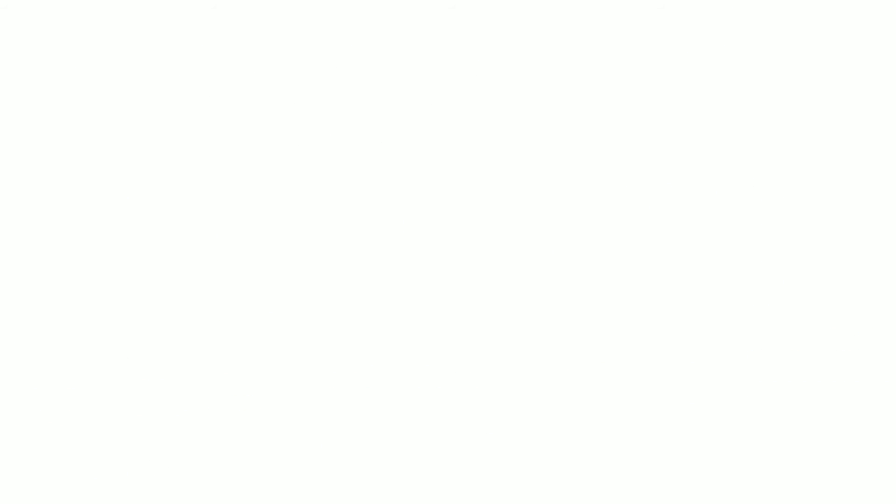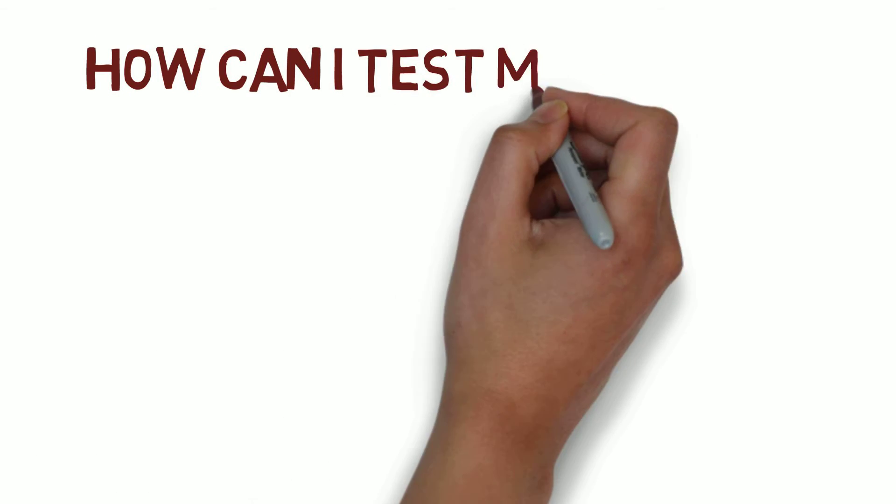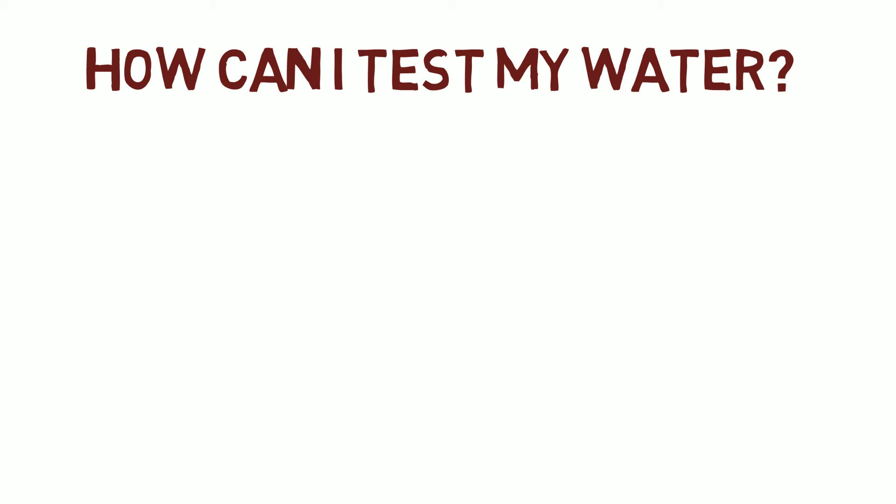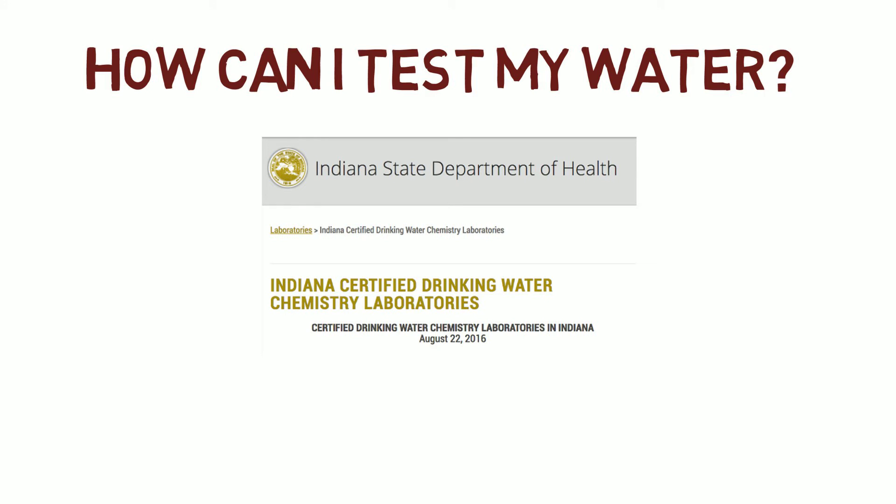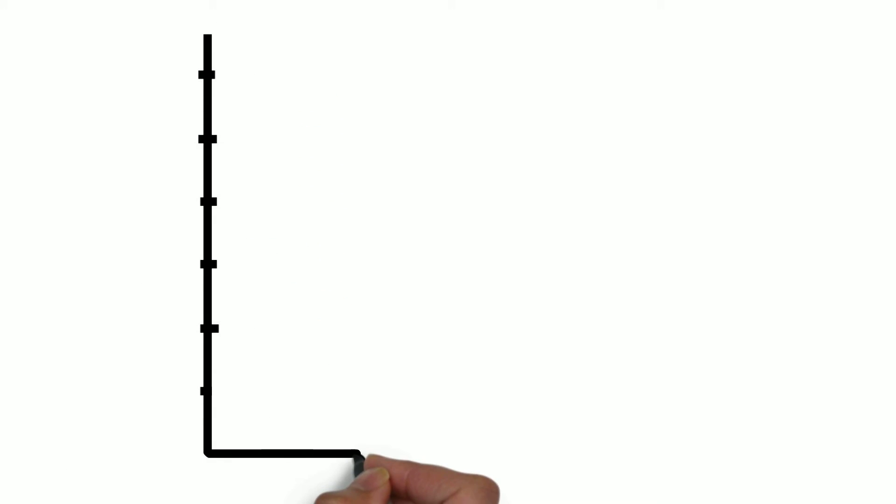How can I test for lead in my water? The EPA doesn't recognize any at-home lead-in-water testing kits as sufficiently accurate. However, the Indiana Department of Health has 11 certified drinking water chemistry laboratories that can test samples. The results will be measured in parts per billion. 15 ppb is the EPA action level, although the CDC says there is no safe level of lead in your water.